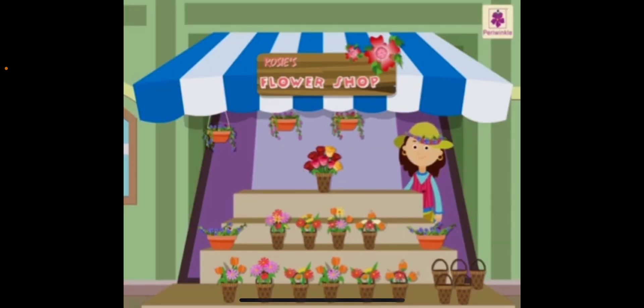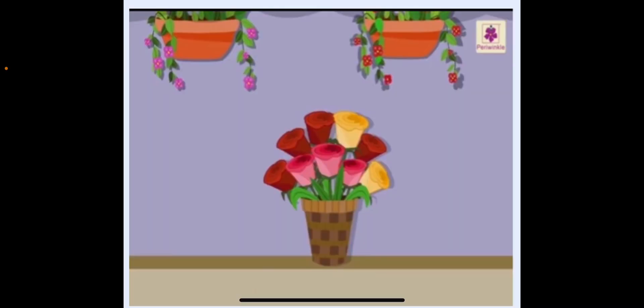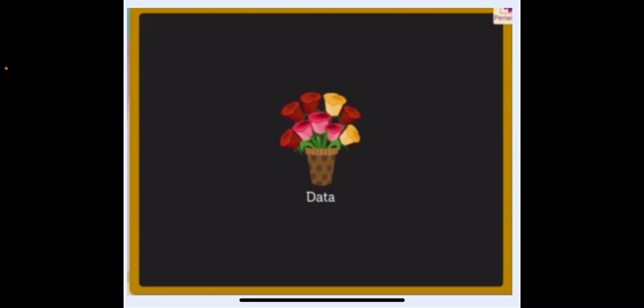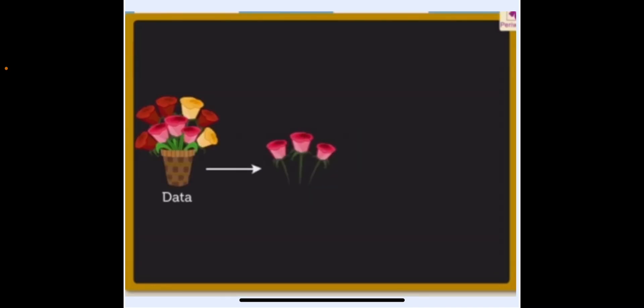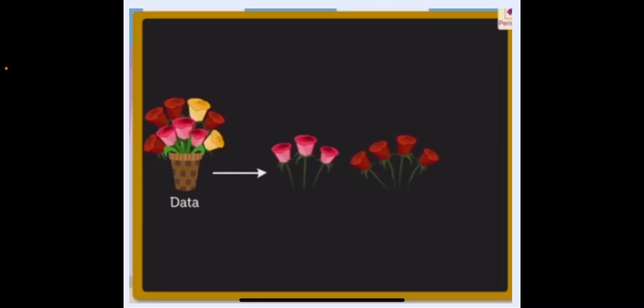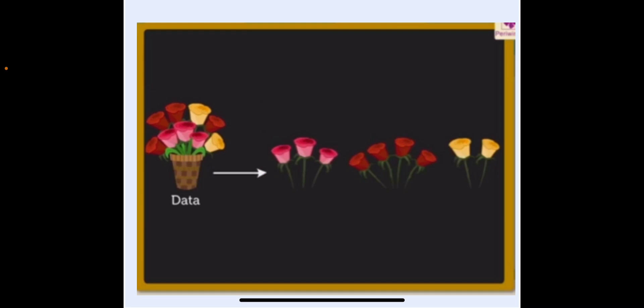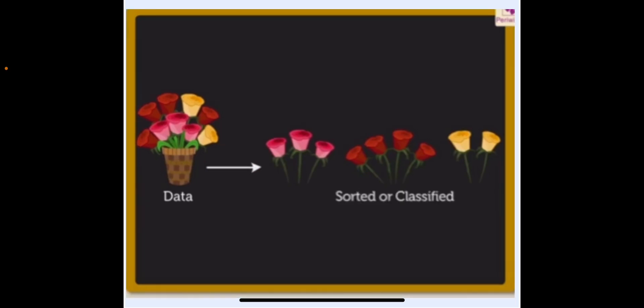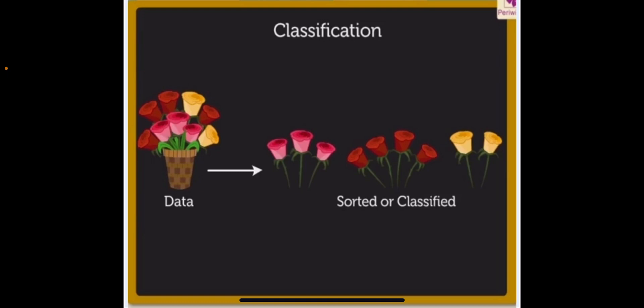Let us learn and understand this in a better way. As you can see in the picture, this is Rosie's flower shop, which has many beautiful flowers. Look at this bouquet — it has three pink roses, four red roses, and two yellow roses. We have separated the roses into groups based on their colors, so the data has been sorted or classified. This is called classification.